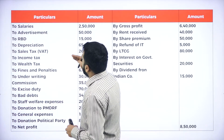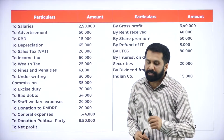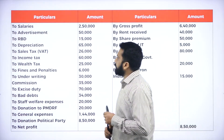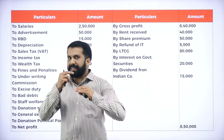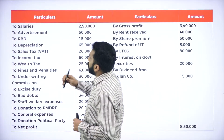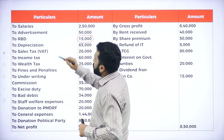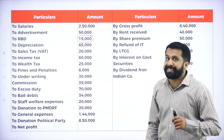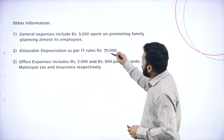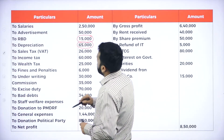Now, which are the items that come under disallowed expenses? We call these inadmissible expenses. I have already given you the list. In this, Salary will not come. Advertisement — no. RBD — yes. Depreciation — we have to see, do we have an adjustment on that? Yes, then we are supposed to consider depreciation.